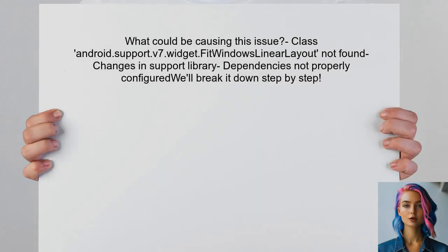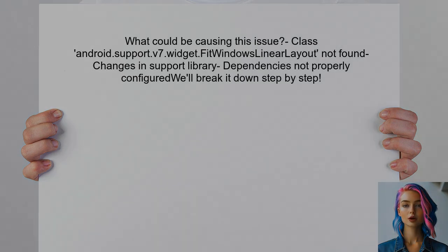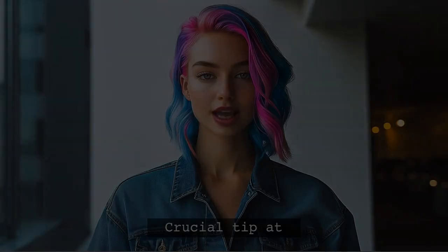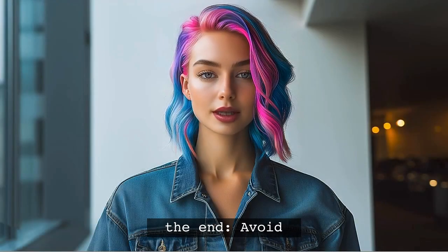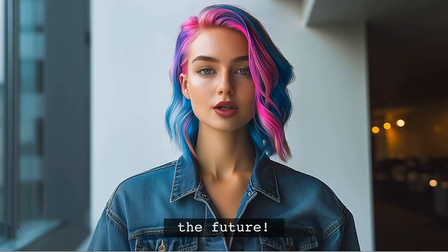So what could be causing this issue? The error message suggests that the class `android.support.v7.widget.FitWindowsLinearLayout` is not found anymore. This can happen due to changes in the support library or dependencies not being properly configured. We'll break it down step by step so you can figure out what's going on. I've got a crucial tip at the end that will help you avoid similar issues in the future.